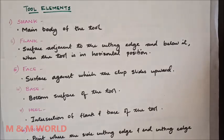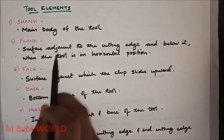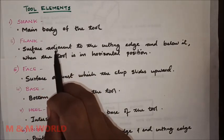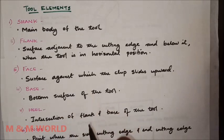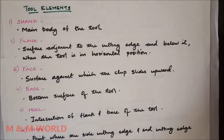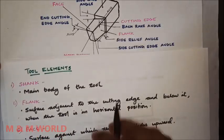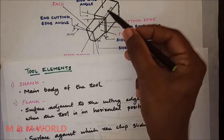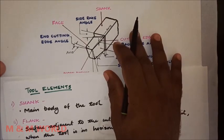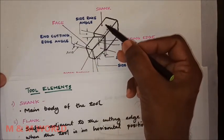Now let us go through the various tool elements. The first one is the shank. The shank is the main body of the tool — the part on which the cutting edge is formed — and it is held in a holder.